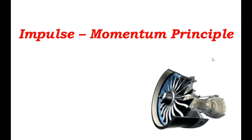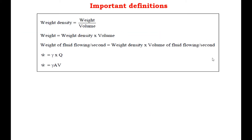The first definition is weight density. Weight density is nothing but weight per unit volume. If you simplify this, you get weight is equal to weight density into volume.